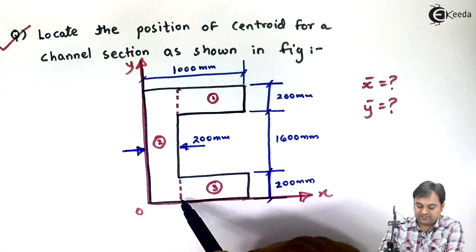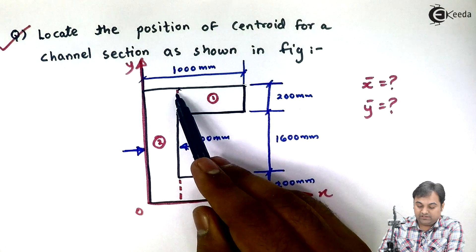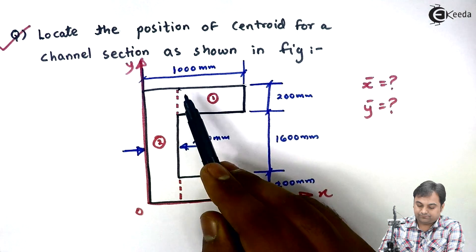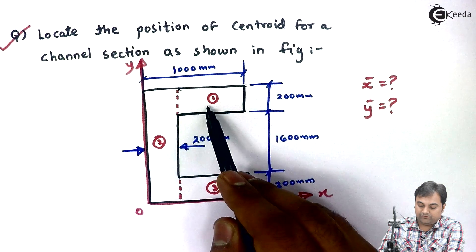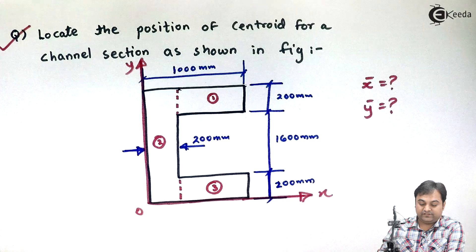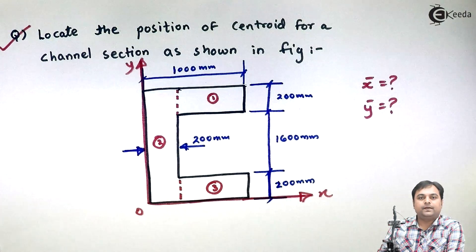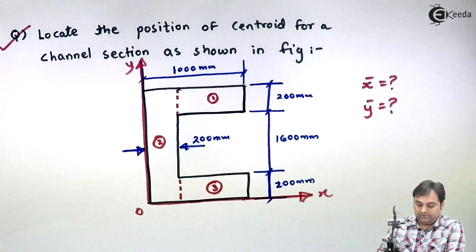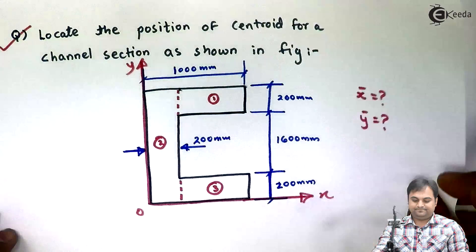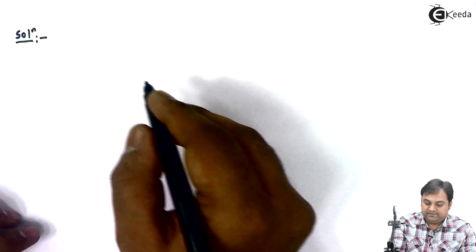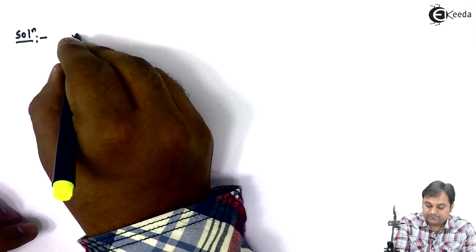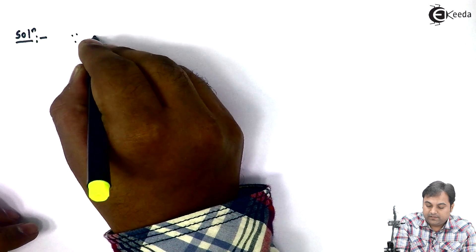In order to get the centroid for the C-section, we will be dividing the C-section into three rectangles. I have divided it into first, second, and third rectangles. Now let us start with the solution part.